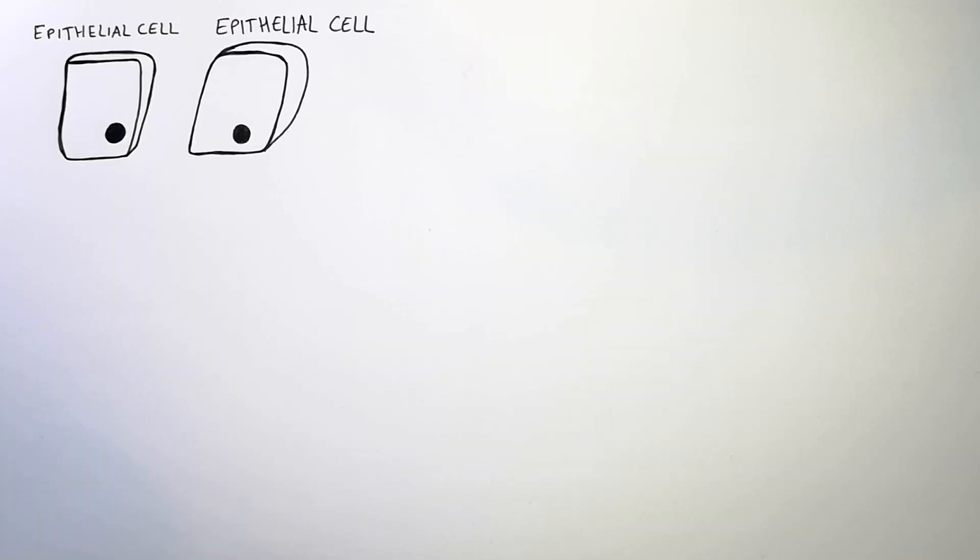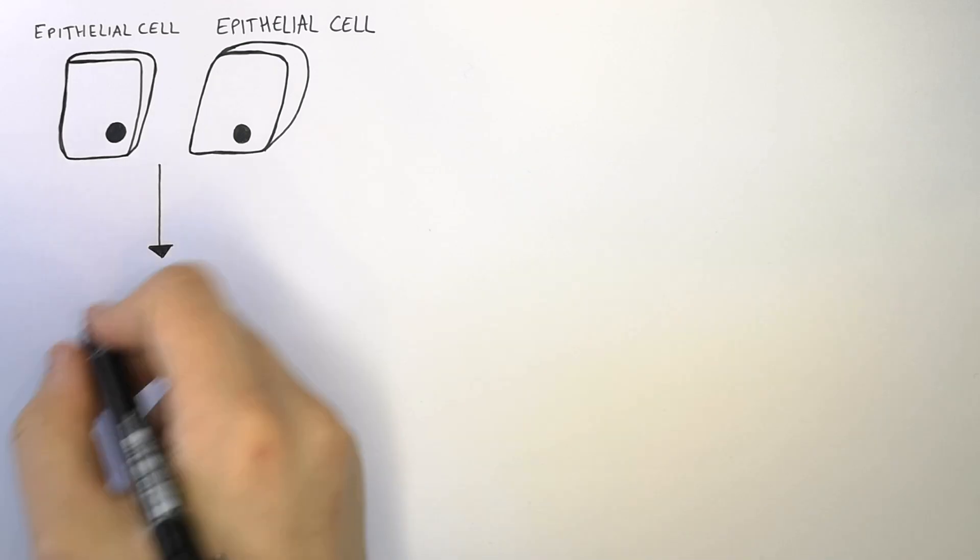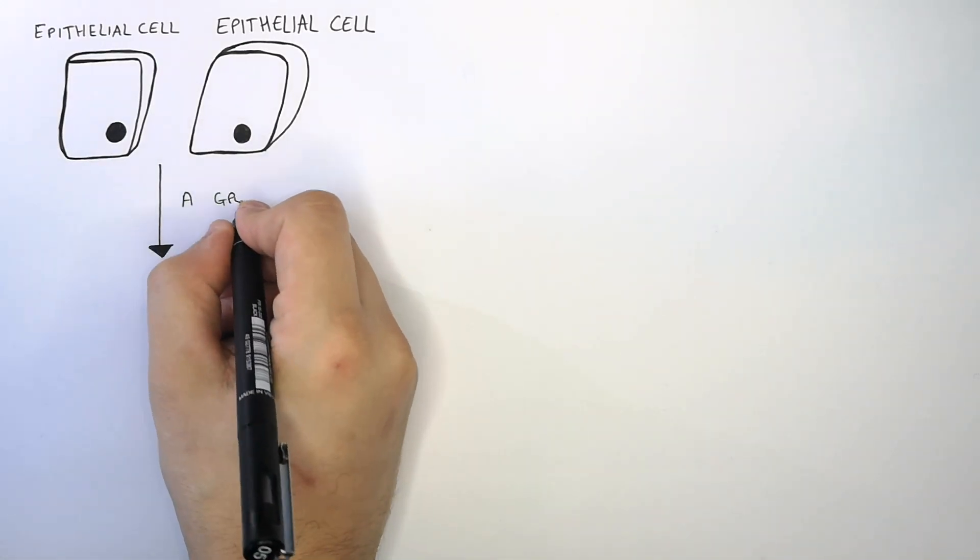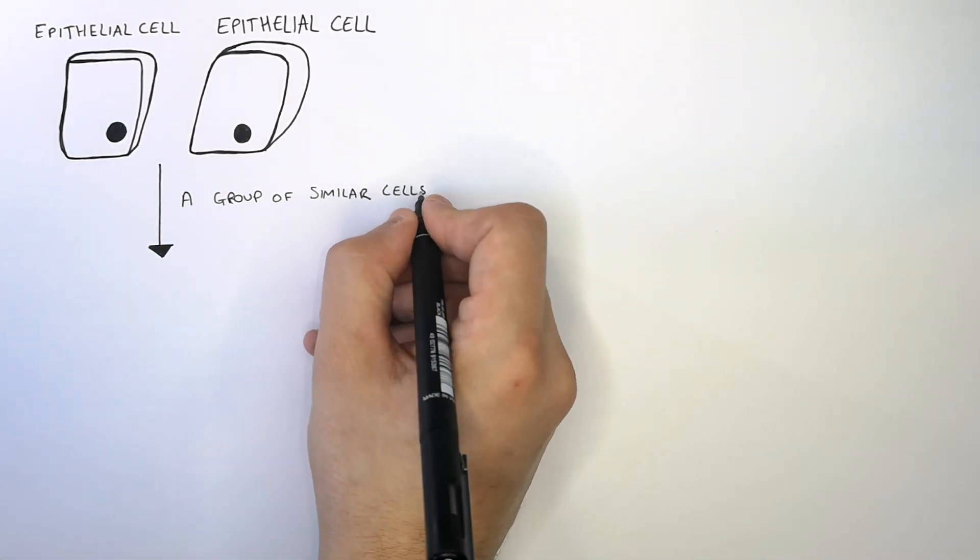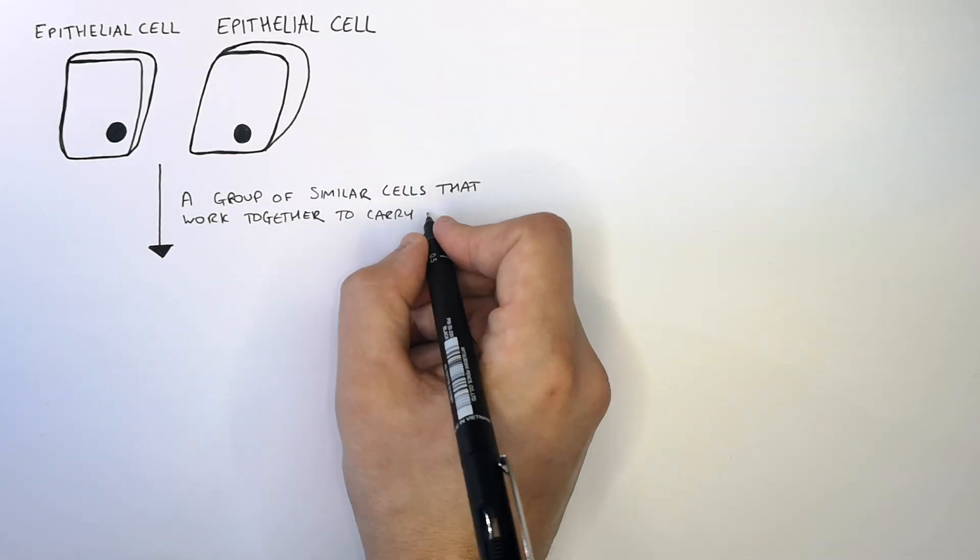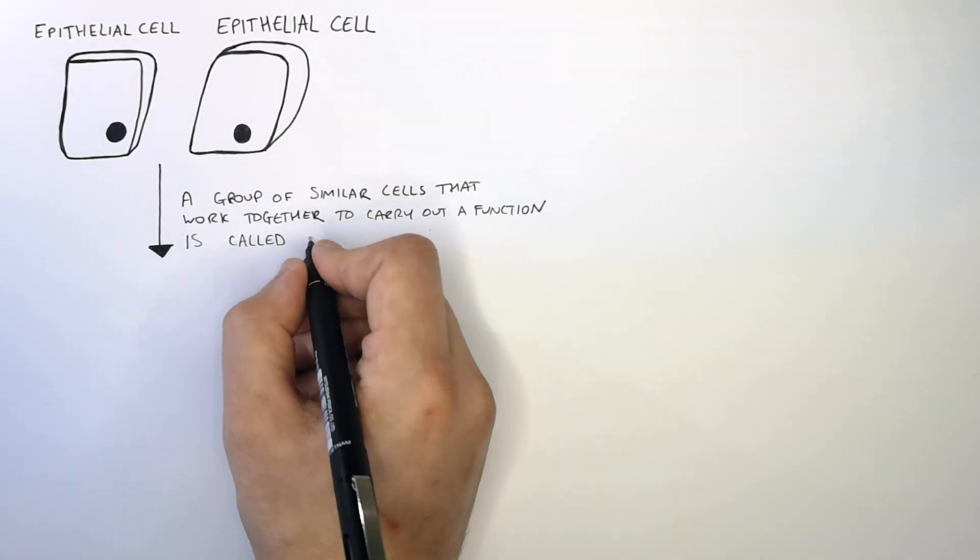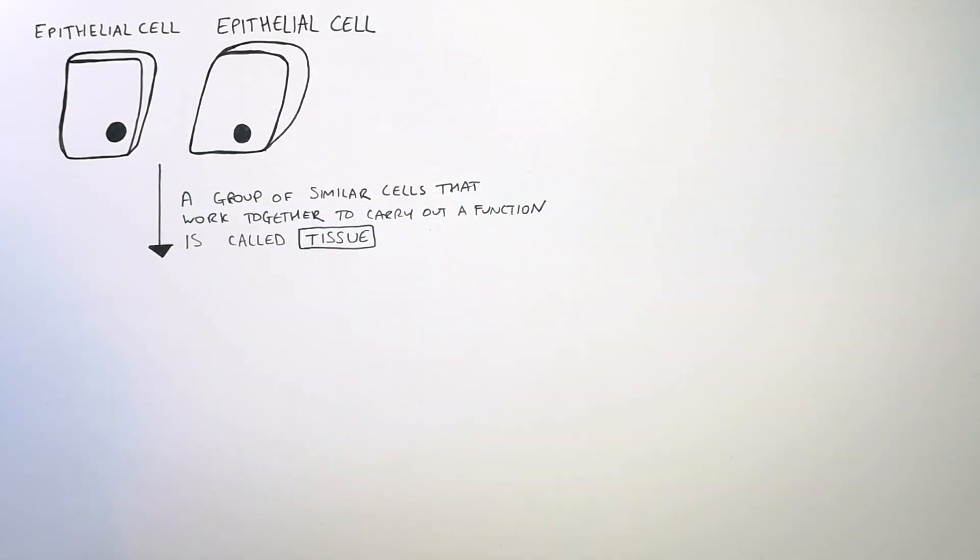These are epithelial cells whereby if these epithelial cells work together they form a tissue. A group of similar cells that work together to carry out a function is called a tissue. Remember, a tissue is a group of cells that carries out a function.